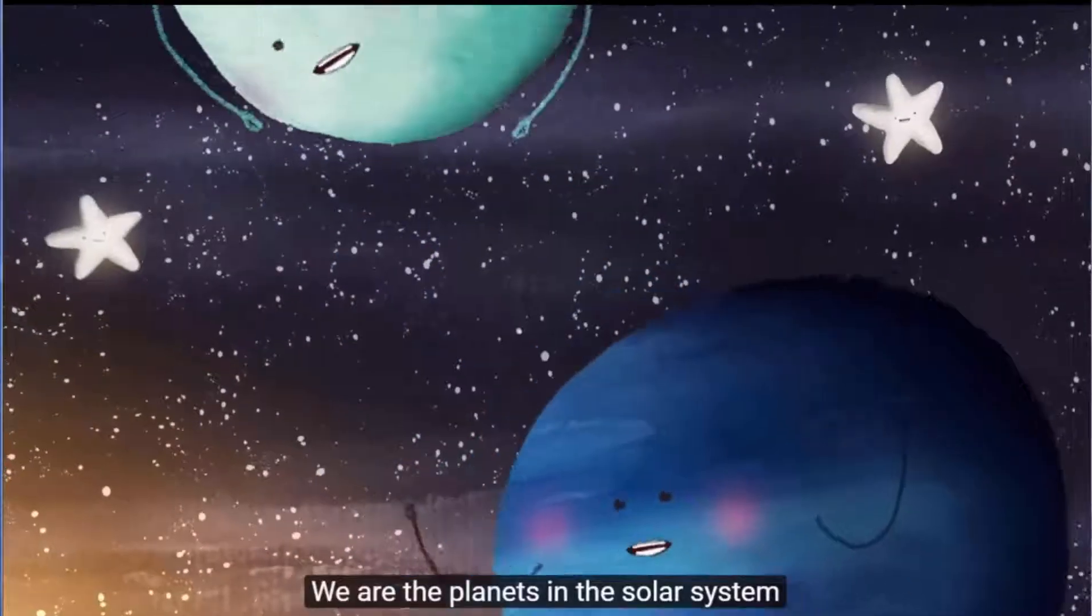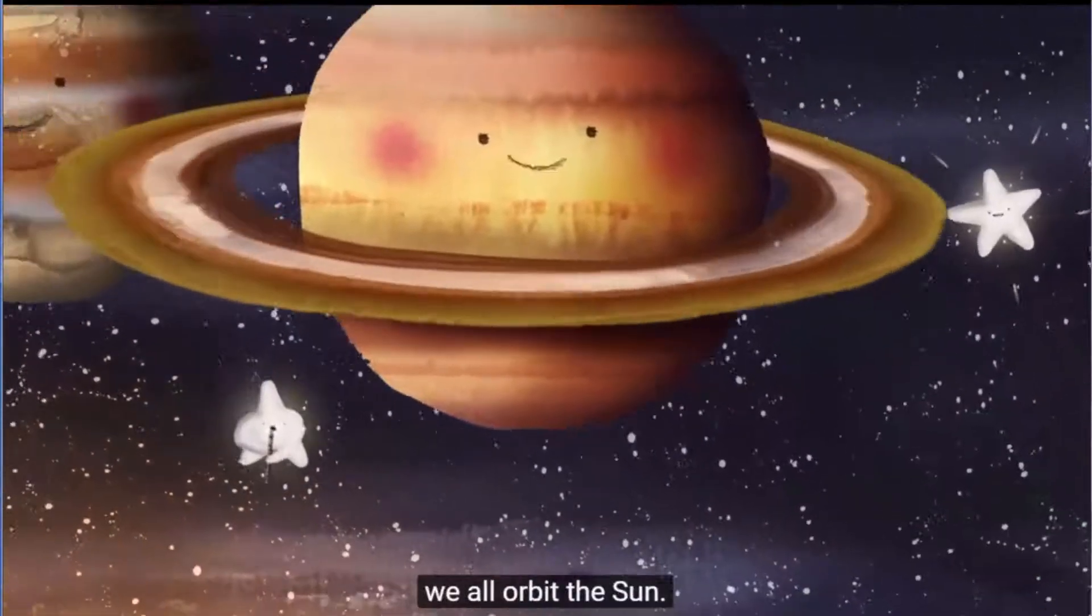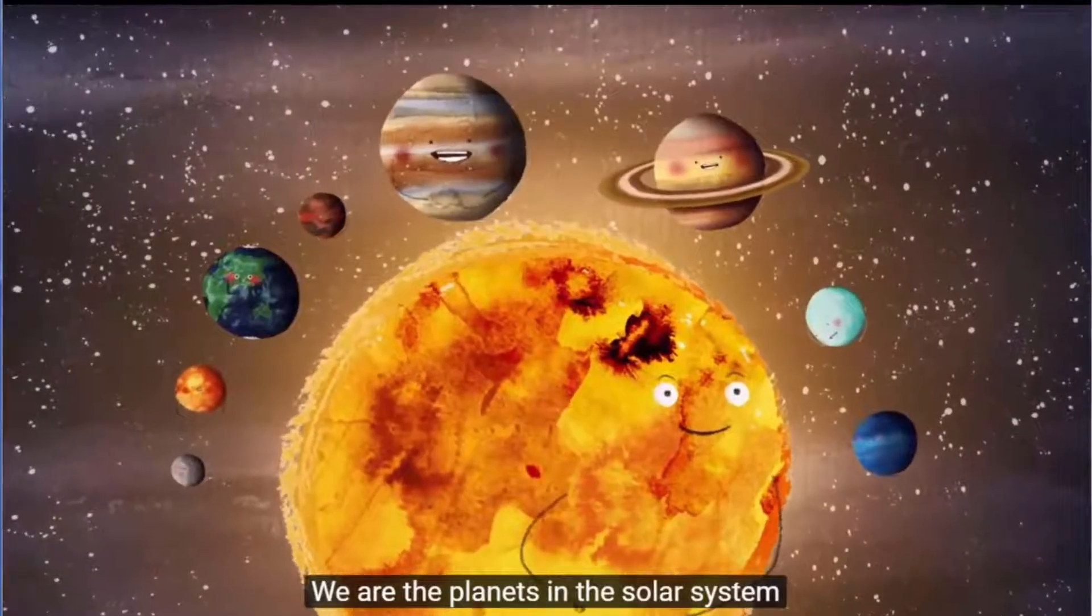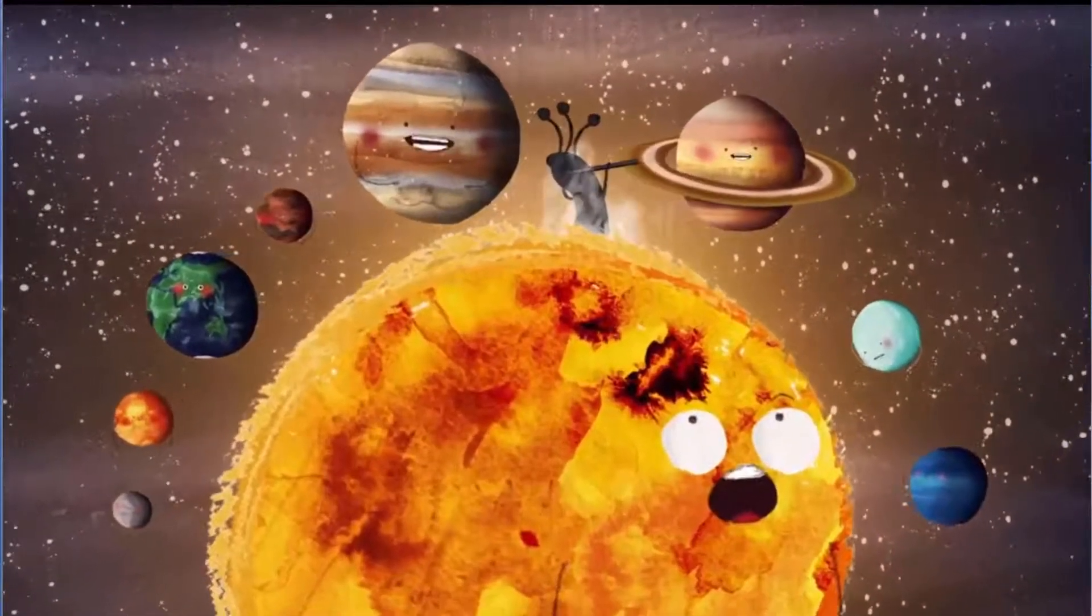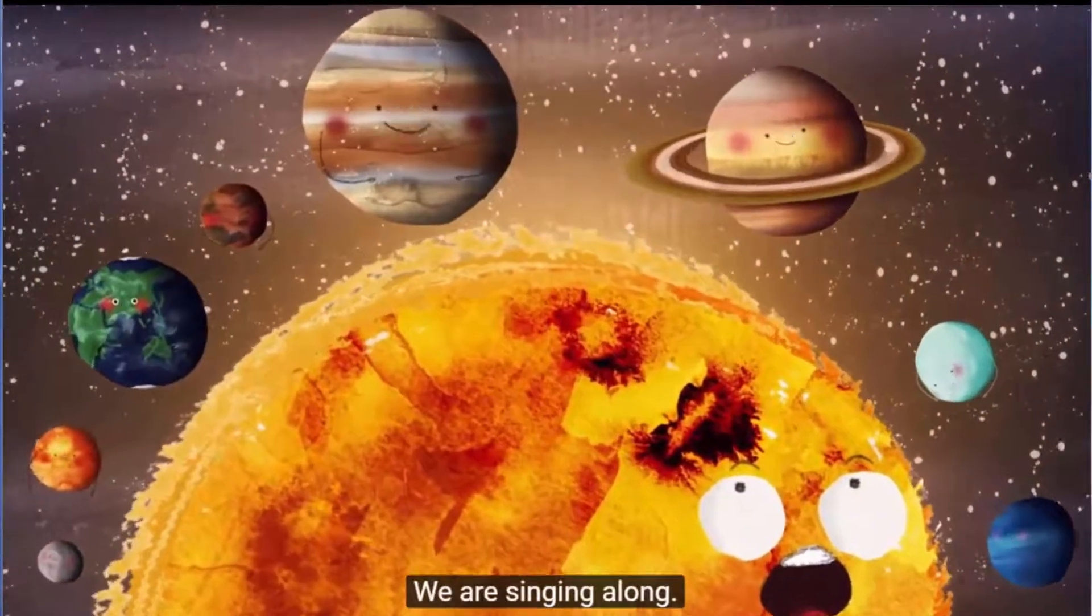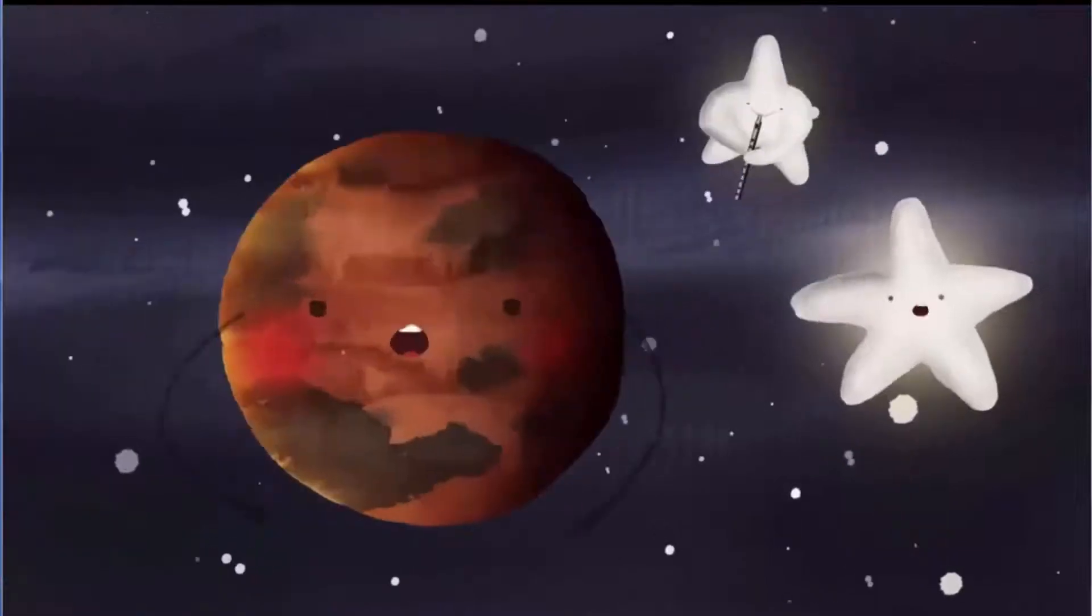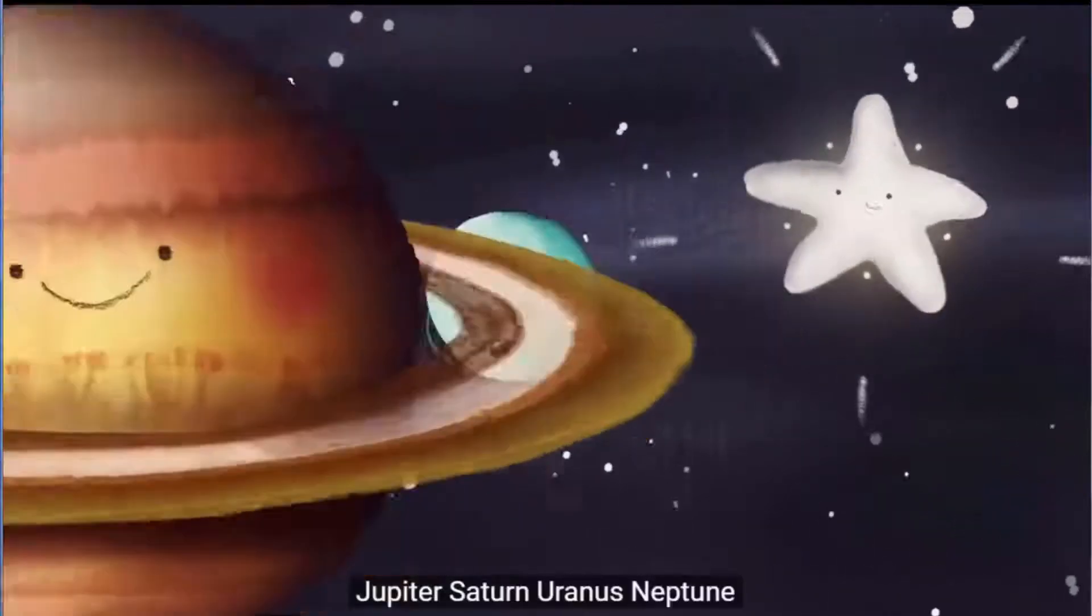We are the planets in the Solar System. We all orbit the Sun. We are the planets in the Solar System. We are singing along. Mercury, Venus, Earth and Mars. Jupiter, Saturn, Uranus and Neptune.